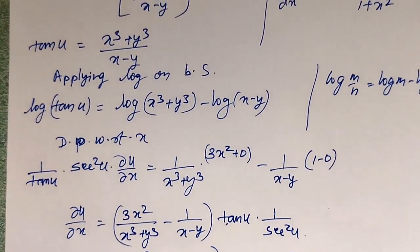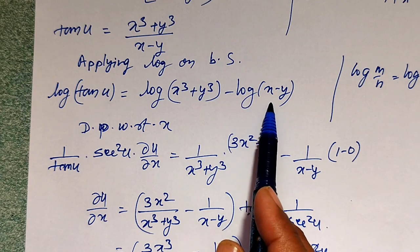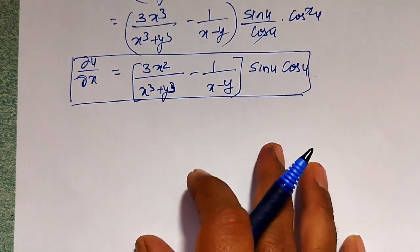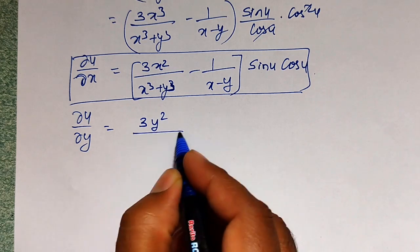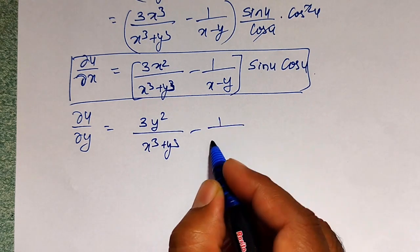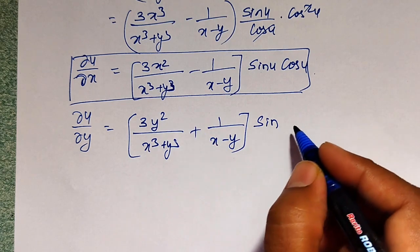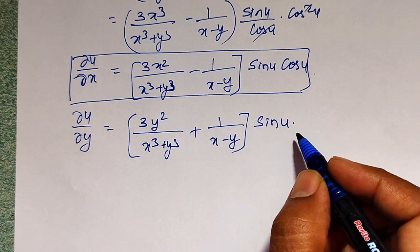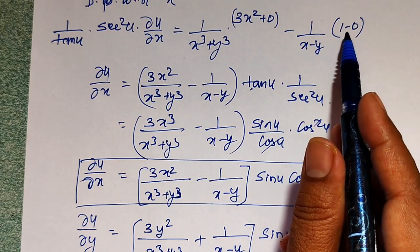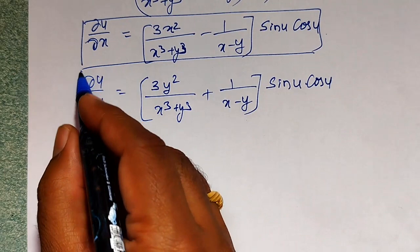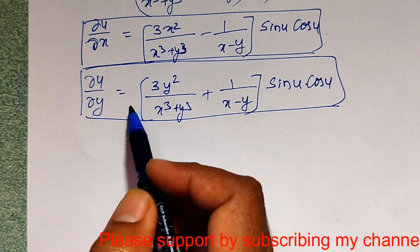Similarly, if we differentiate log of tan u equal to log of x cube plus y cube minus log x minus y with respect to y, what I am going to get is ∂u/∂y equal to 3y square divided by x cube plus y cube, plus 1 divided by x minus y, into sin u into cos u. Here it is plus because the differentiation of x minus y with respect to y gives minus 1, making minus of minus equal to plus.